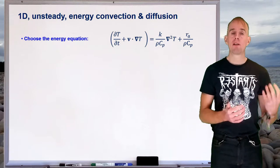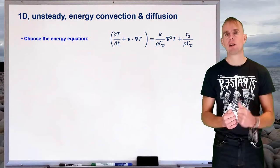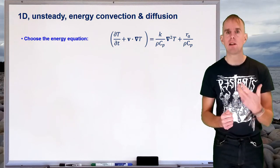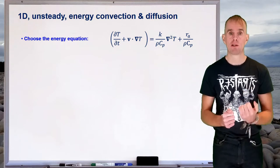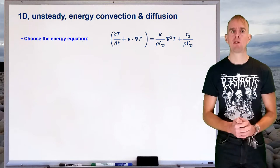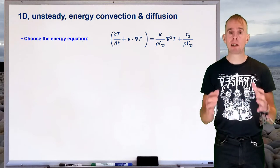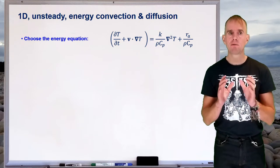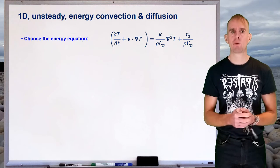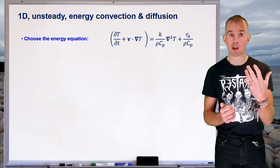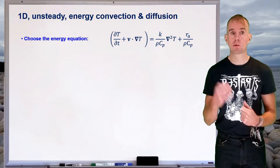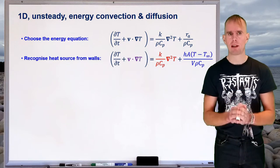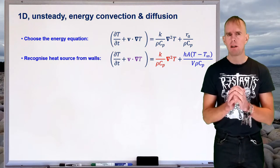Now the next thing is to apply those simplifications to the energy transport equation. Remember the importance of being comfortable with transport equations in vector form — it allows very quick and easy simplification before worrying about the coordinate system. Here on the whiteboard I've written the energy transport equation in vector form, with the total derivative expanded on the left-hand side giving us the partial time derivative and our convection term, our V dot grad T term. On the right-hand side we have our Laplacian diffusion term — heat conduction — and our heat source term involving Ra. The first thing to recognise is what form that heat source takes, Ra over rho Cp.